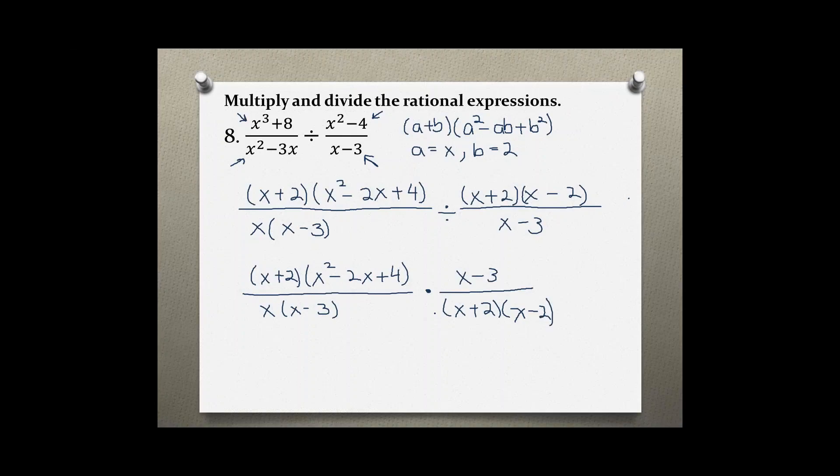We are ready to cancel out terms now, so we have x plus 2 on top, x plus 2 on bottom, x minus 3, x minus 3, and we rewrite what's left. So we have x squared minus 2x plus 4, and we got x and x minus 2.